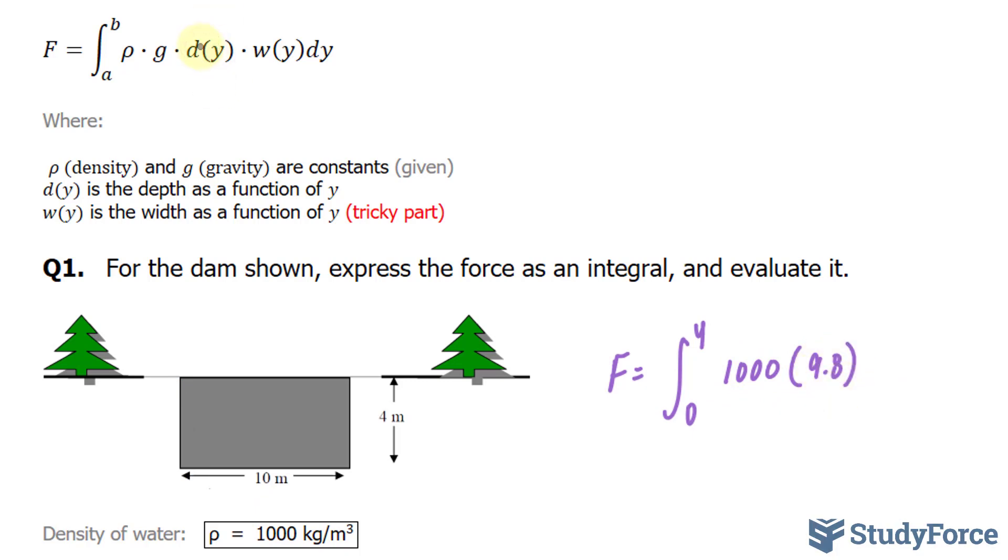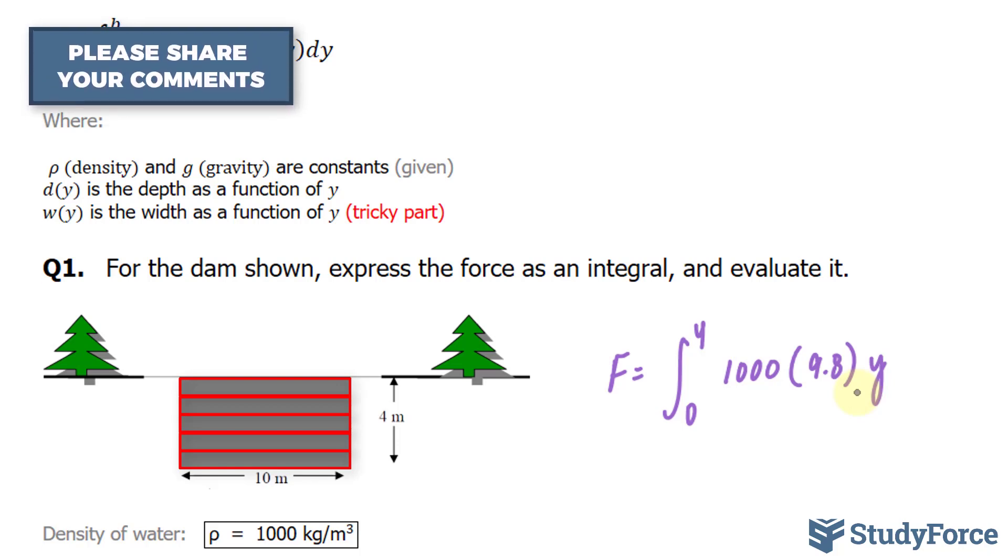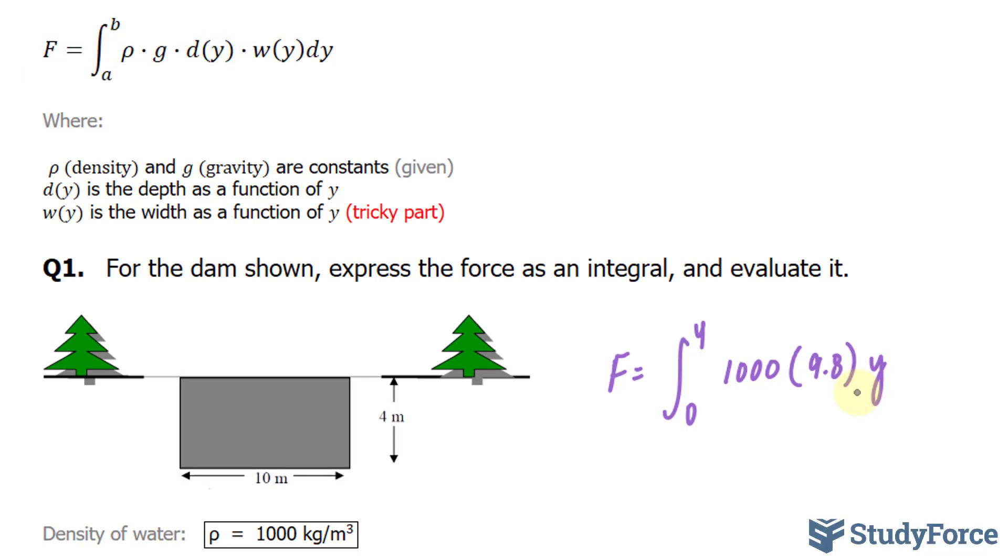The depth function is represented as y. Because if we took mini rectangles all along the rectangular dam, these mini rectangles would have the dimensions of width times the depth y. So we want the y part of those rectangles, which we'll represent as the change of y. And the width is represented as the width of those rectangles that we just drew, which would all be 10.